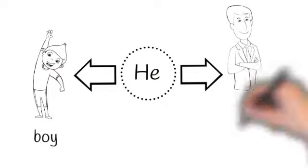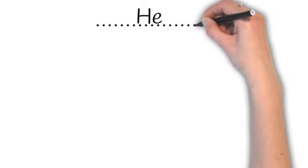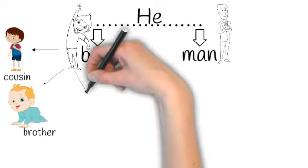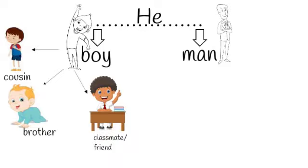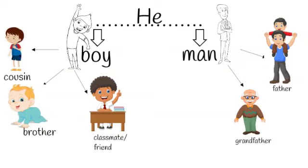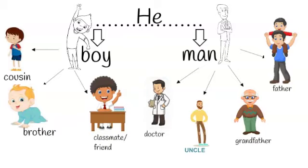Let me explain in detail. He indicates a boy or a man. A boy can be your cousin, so we will say he is my cousin. A boy can be your baby brother, so we will say he is my baby brother. A boy can be your classmate or a friend, so we will say he is my classmate or he is my friend. Your father is a man, so you will say he is my father. Your grandfather is a man, so you will say he is my grandfather. Similarly, your uncle is a man, so you will say he is my uncle. This doctor is a man, so we will say he is a doctor.